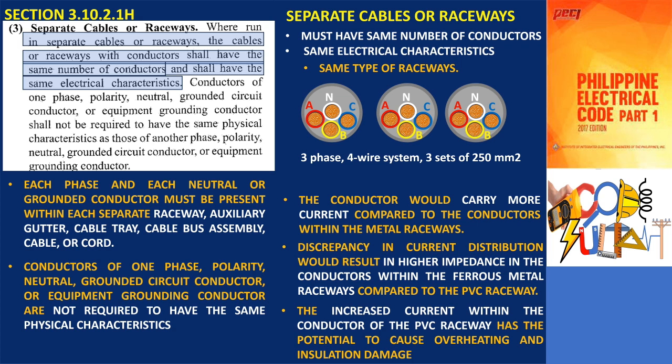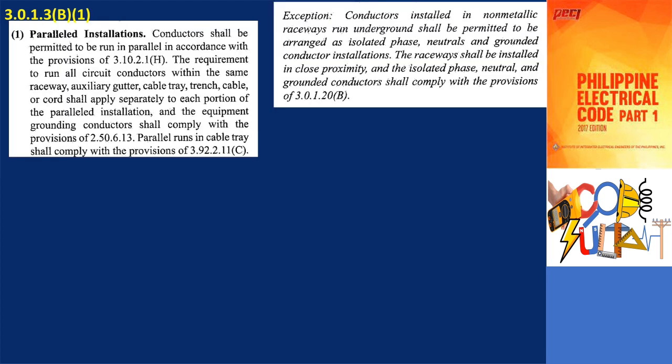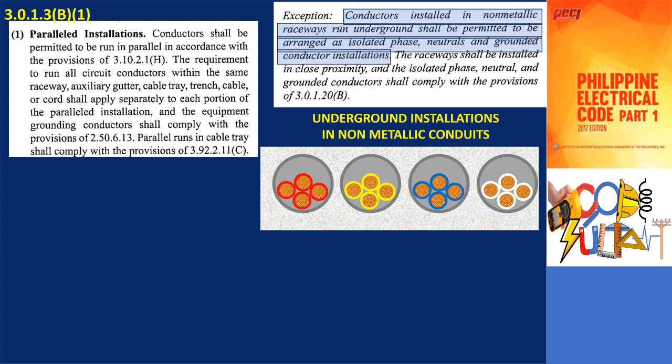Conductors of one phase, polarity, neutral, grounded circuit conductor, or equipment grounding conductor are not required to have the same physical characteristics as those of another phase, polarity, neutral, grounded circuit conductor, or equipment grounding conductor. In exception of 3.0.1.3B, one allows conductors to be installed in non-metallic raceways for underground applications.